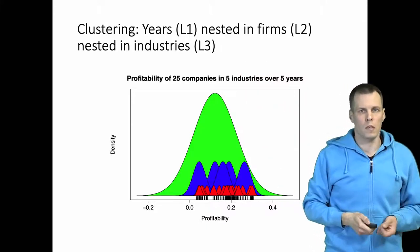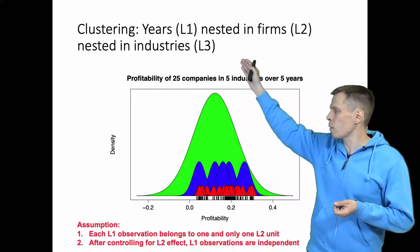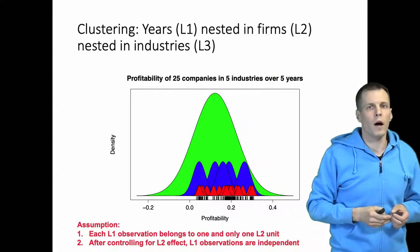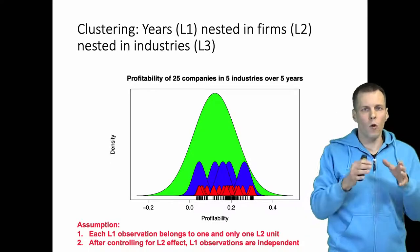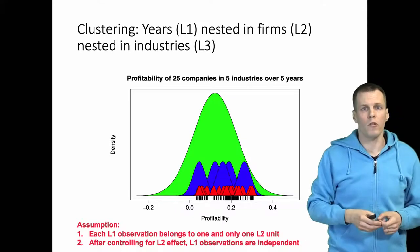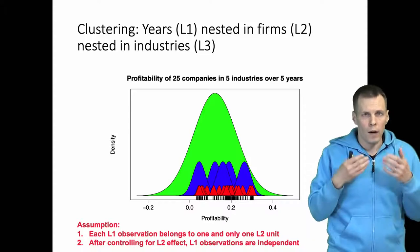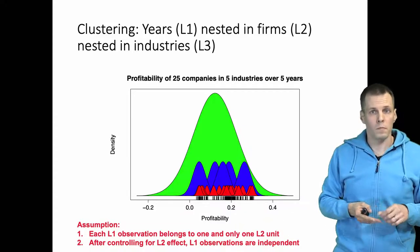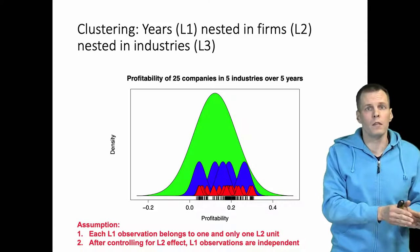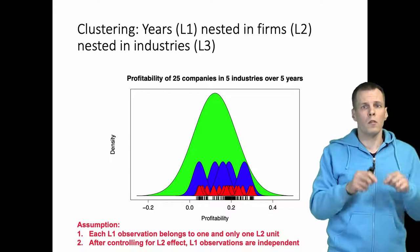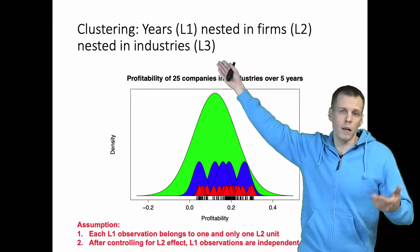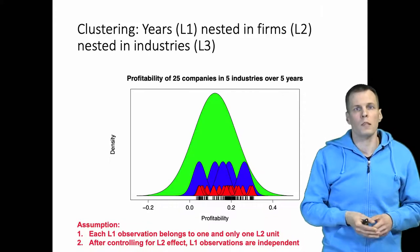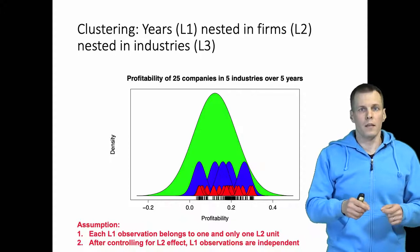We make two important assumptions. First, we make the assumption that each level one observation belongs to only one level two unit, and each level two unit belongs to only one level three unit. So these form a kind of hierarchy — there is a many-to-one correspondence between these levels. Another important assumption for estimation is that the firms in one industry are independent of the firms in another industry. So after controlling for possible common level three effects, the level two effects are independent, and level one effects within level two effects are independent.